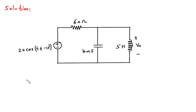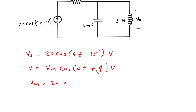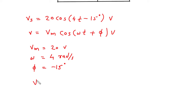Now here we can see, let's say this is Vs. So Vs is equal to 20cos — the unit will be volt. We can compare this with V = Vm·cos(ωt + φ) volt. From this, Vm = 20 V, ω = 4 rad/s, and φ = −15°. In phasor form, Vs = 20∠−15° volt.